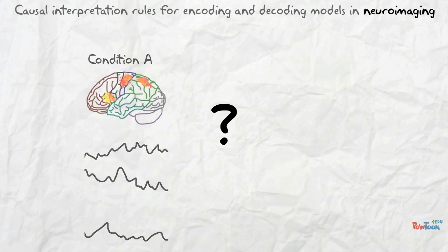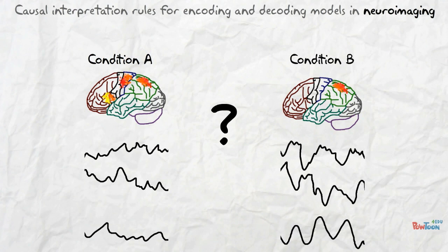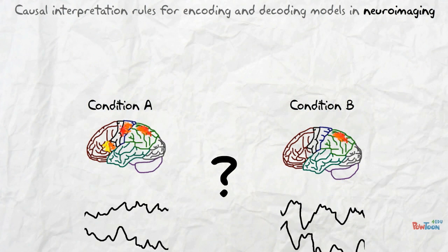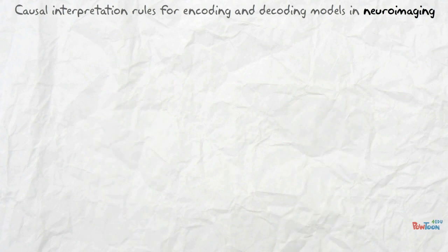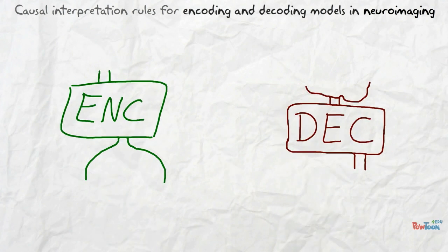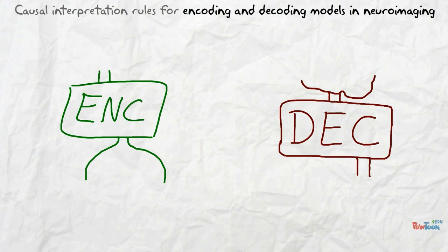To answer such questions, one needs to identify systematic differences between the brain state features for the different experimental conditions. This, however, is very difficult for neuroimaging data. To help with this, powerful machine learning algorithms are commonly trained to obtain so-called encoding or decoding models.